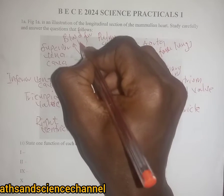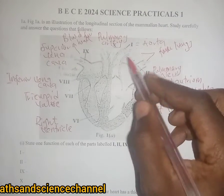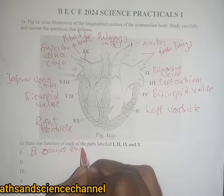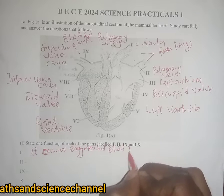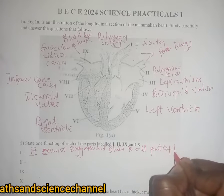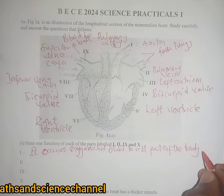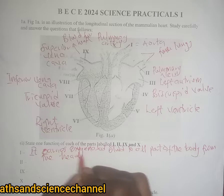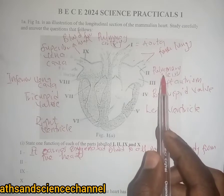What the aorta does is that it carries oxygenated blood to all parts of the body from the heart, except the lungs of course.